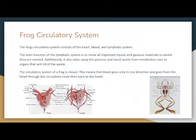For the frog circulatory system, it consists of the heart, blood, and vascular system. The main function is to move all the important liquids and gaseous materials to where they are needed, and also take away the gaseous and liquid waste from metabolism to the organs that will rid of the waste. The circulatory system of a frog is closed, meaning blood goes only in one direction — from the heart through the circulatory route and back to the heart. It is composed of veins, arteries, two complete circuits, and a three-chambered heart.